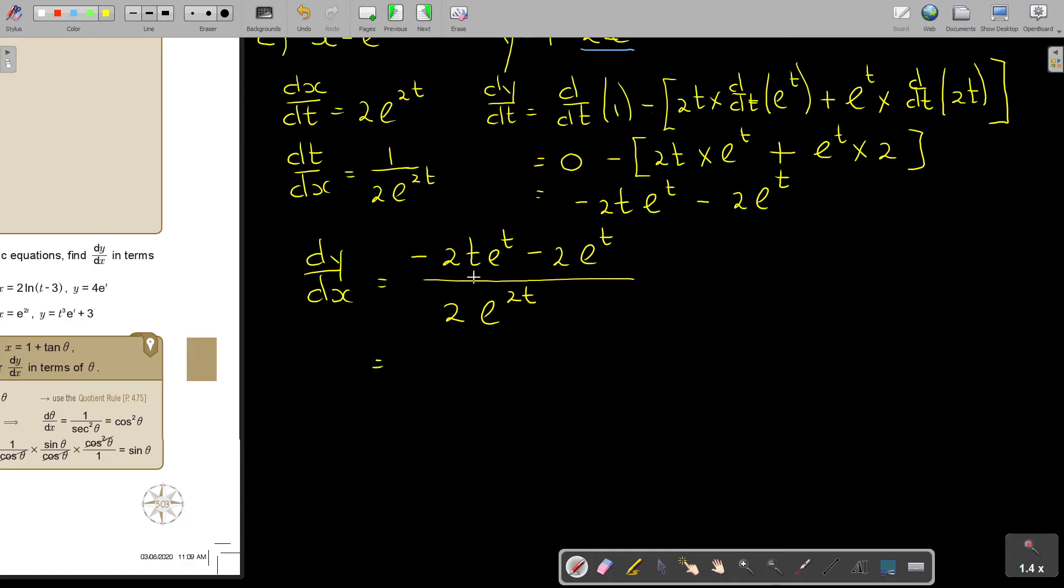So in this case, I'm going to take out negative 2, and I take out e to the power of t. Now, remember, at negative, just concentrate on your signs.